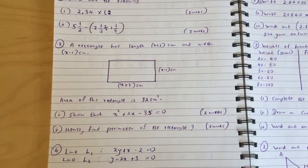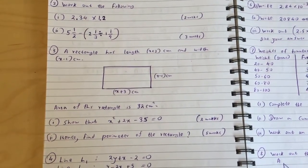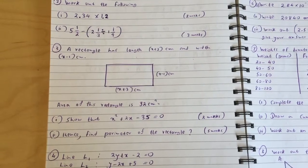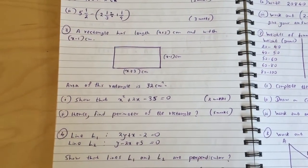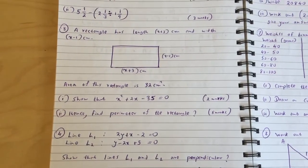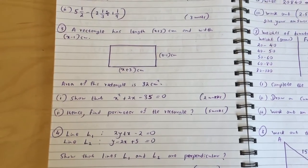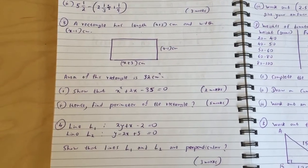Question 3: A rectangle has length x plus 3 centimeters and width x minus 1 centimeters. Area of this rectangle is 32 centimeters squared. Part 1: Show that x squared plus 2x minus 35 equals 0. Part 2: Hence find perimeter of the rectangle.